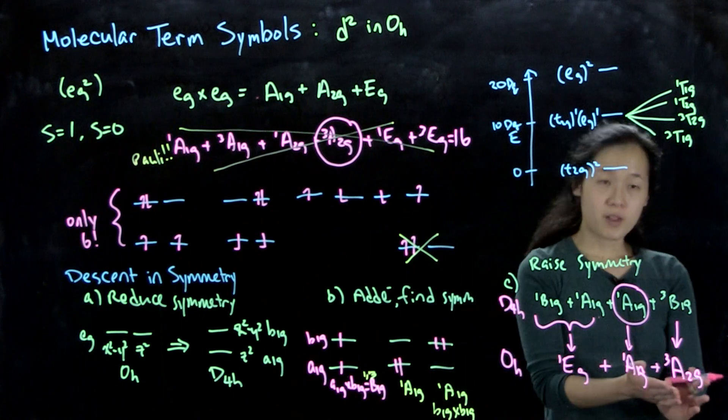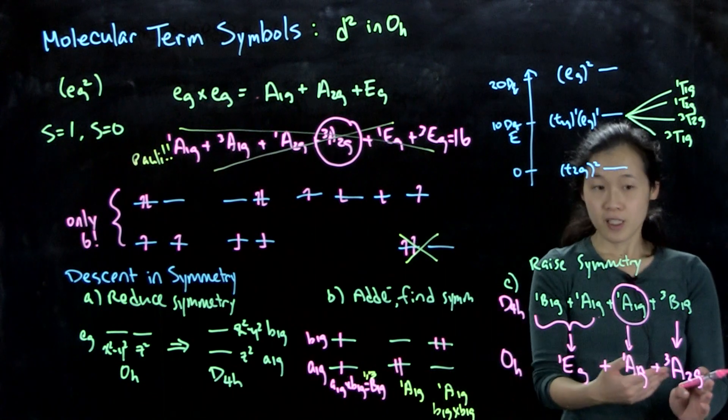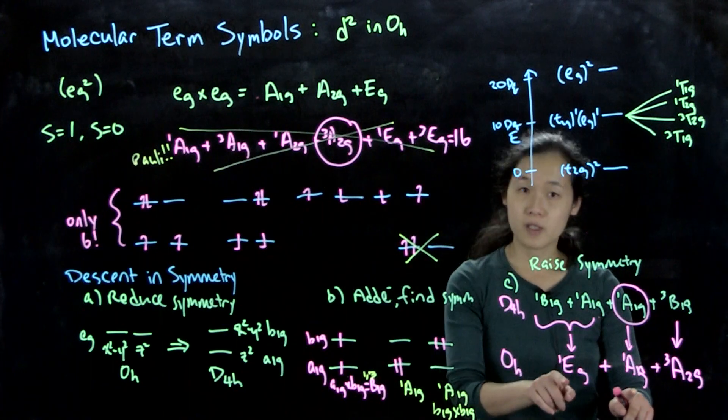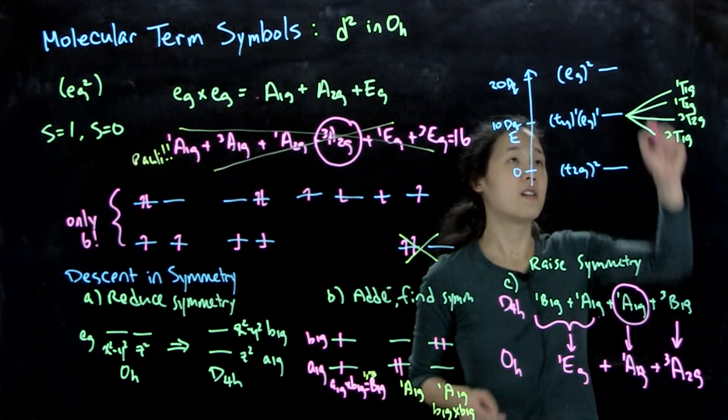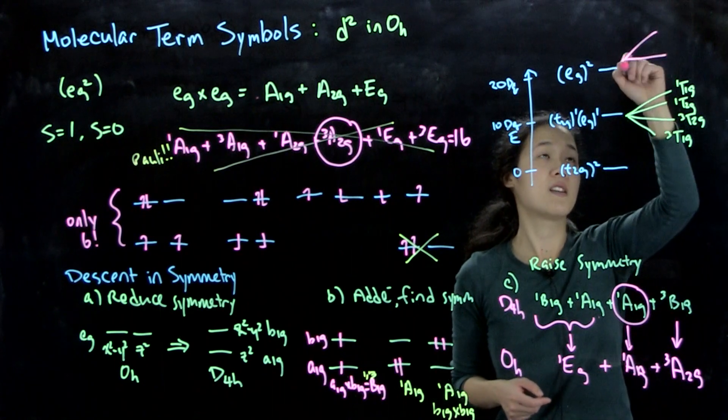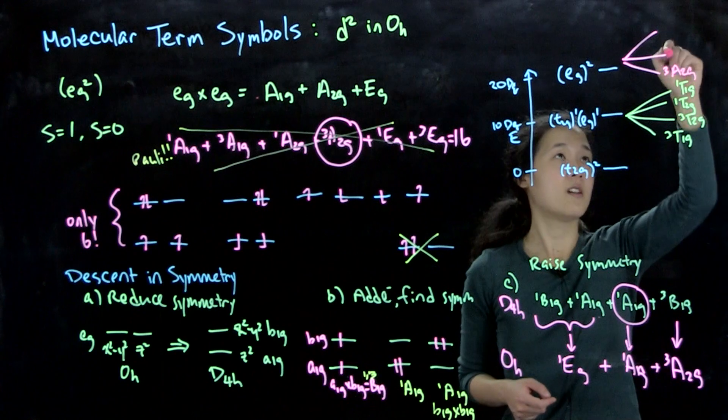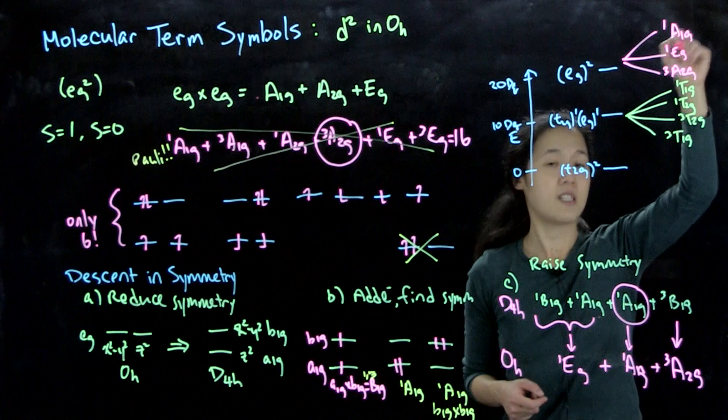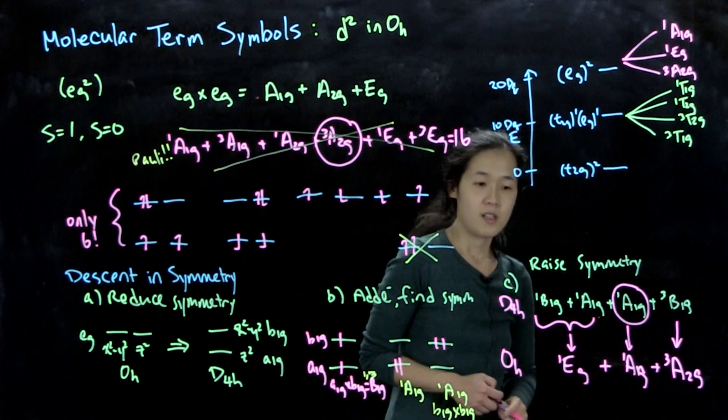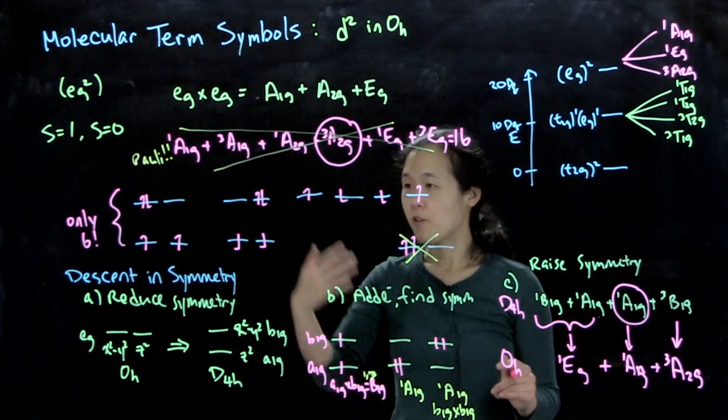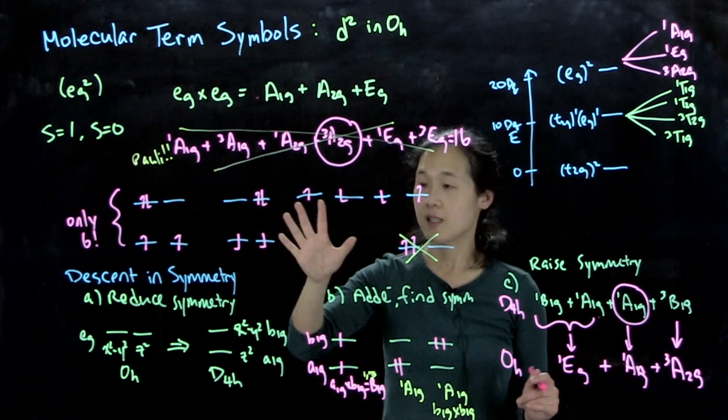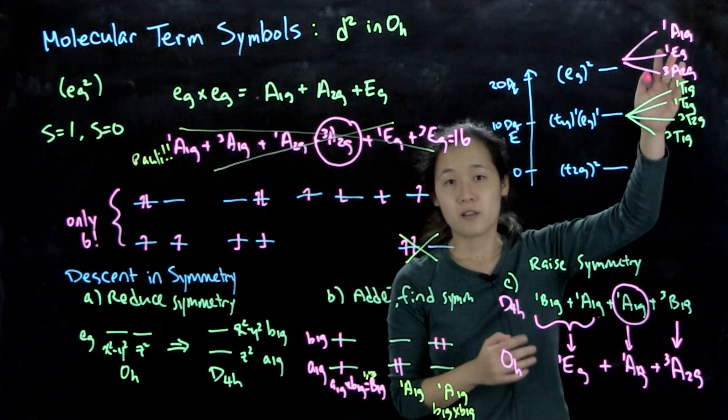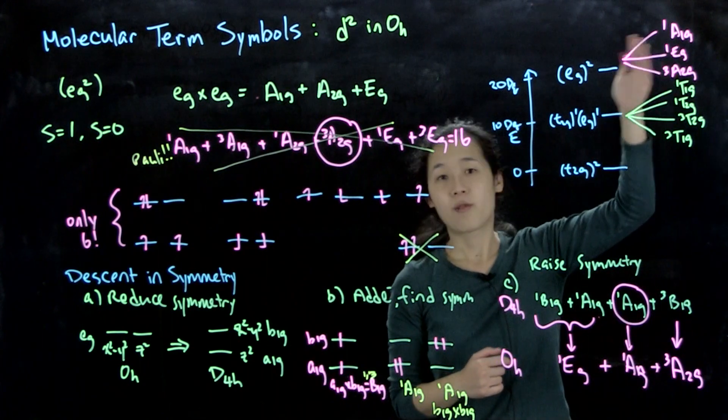So in octahedral, our final states are singlet eg plus singlet a1g plus triplet a2g. And by Hund's rule, this triplet a2g has to be the lowest in energy. And these two are both singlet states, so the higher orbital symmetry is lower energy. So our final ordering of our three states is going to be triplet a2g, singlet eg, and singlet a1g. So this is how we can use descent in symmetry to kind of overcome the problems that we got from the Pauli exclusion principle when we are multiplying our degenerate orbitals out to get to our final terms that arise from this configuration.